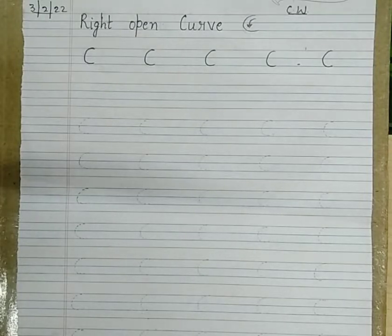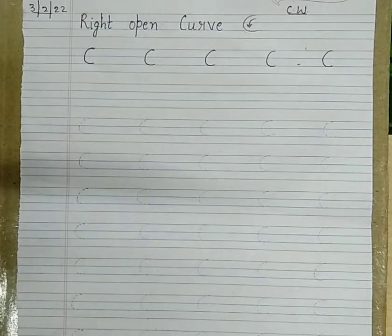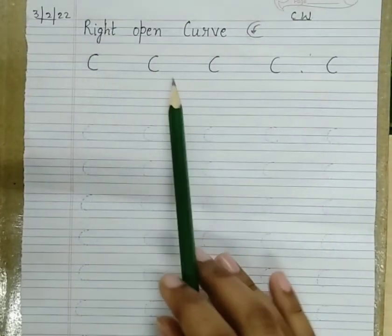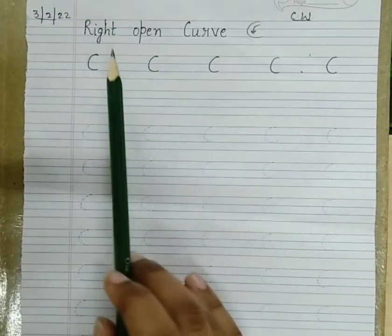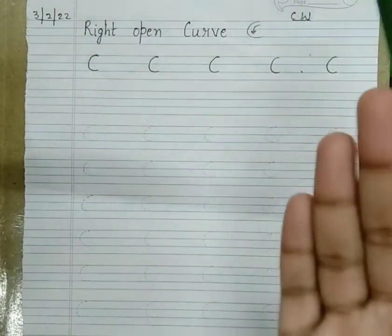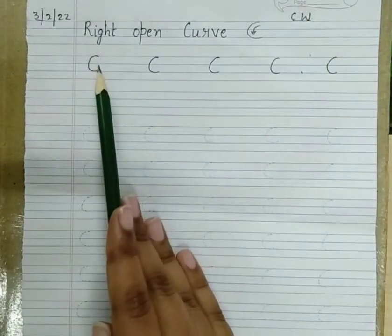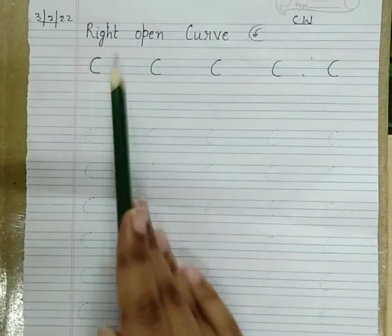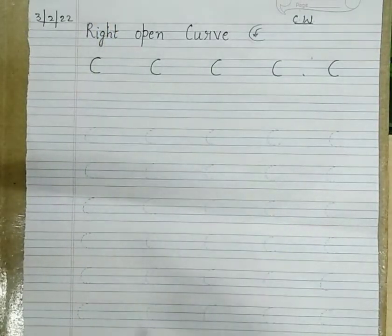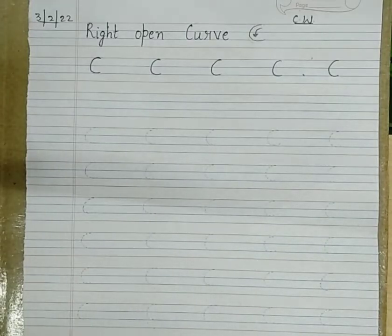So far we have done our left open curve, and today I am going to teach you how to make a right open curve. Can you see here? This is our right open curve because it is open from the right side — this is our right hand — so that is why it is known as right open curve.